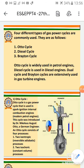Modern petrol engines are spark ignition internal combustion engines. This cycle was introduced by Nicholas August Otto, who was a German engineer. The Otto cycle consists of four processes: two isentropic processes, which are reversible adiabatic, and two isochoric processes, which are constant volume processes.